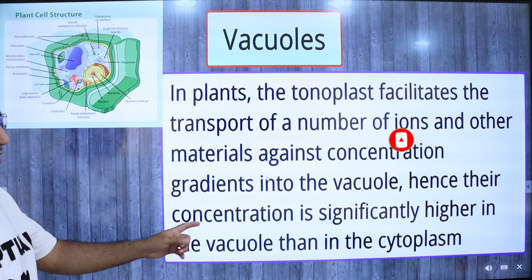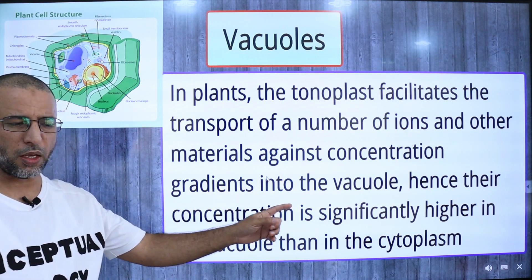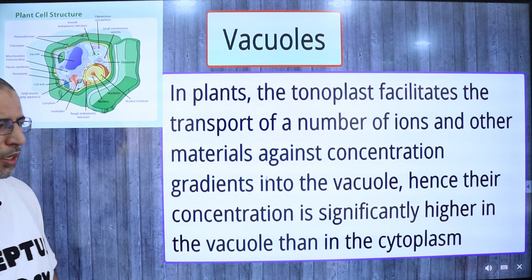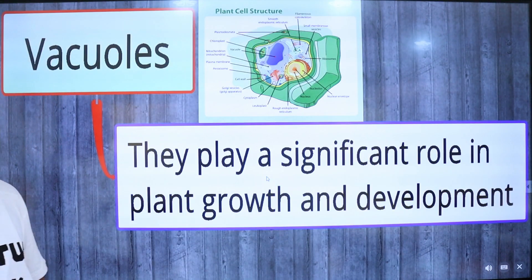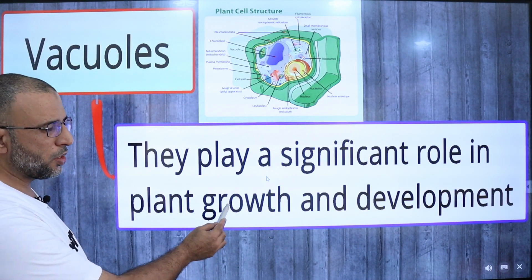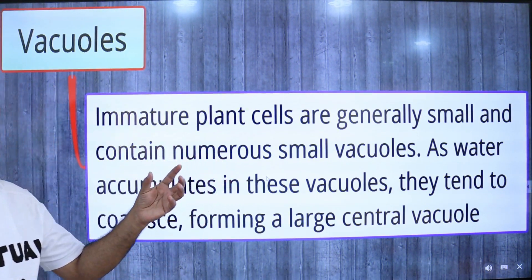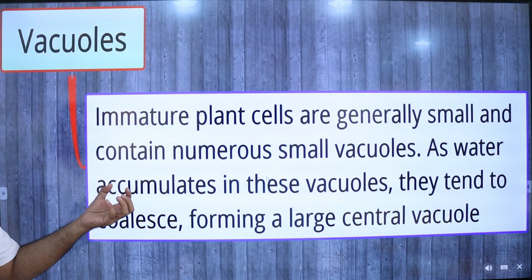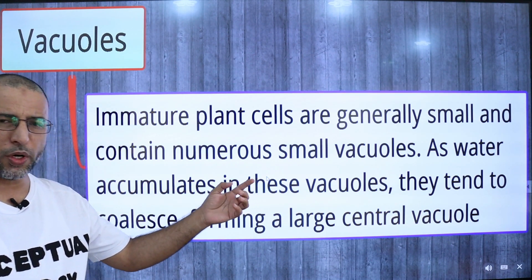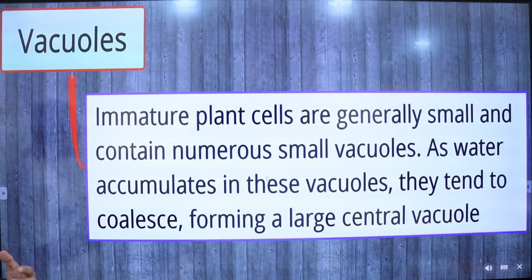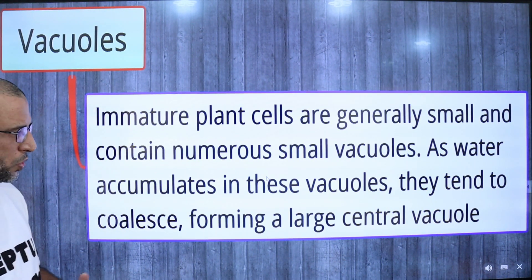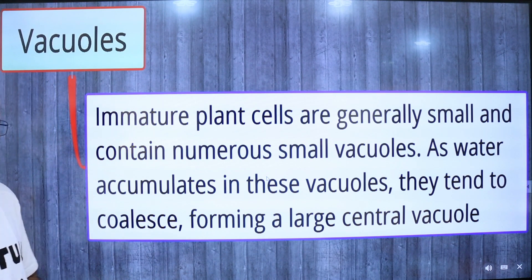The concentration of ions is significantly higher in the vacuole than in the cytoplasm, so they play a significant role in plant growth and development. Immature plant cells are generally small and contain numerous small vacuoles. As water accumulates in these vacuoles, they tend to coalesce — that is, blend, consolidate, or fuse — forming a large central vacuole.